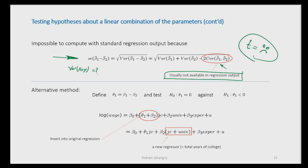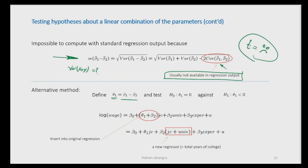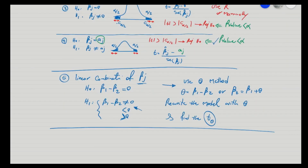We define theta as β1 minus β2 — if it were β5 minus β6, we'd define it that way. We test whether theta equals zero or is less than zero. In our case the alternative was β1 minus β2 less than zero, which equals theta less than zero. So the null is theta equals zero, and the alternative is theta less than zero (or other directions depending on the problem).